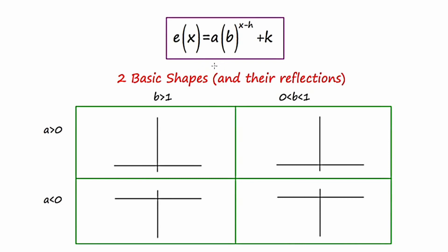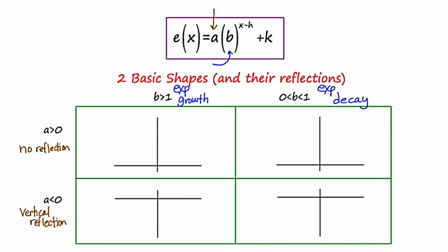Let's focus on the all-important base. If the base is some number bigger than one, we're going to have exponential growth. Conversely, if that base is a fraction between zero and one, we're going to have exponential decay. The other element to look at is the coefficient out in front. If a is greater than zero — meaning it's positive — there's no reflection. Conversely, if a is less than zero, that's negative, and there is going to be a reflection — namely a vertical reflection, which is a reflection over the x-axis.